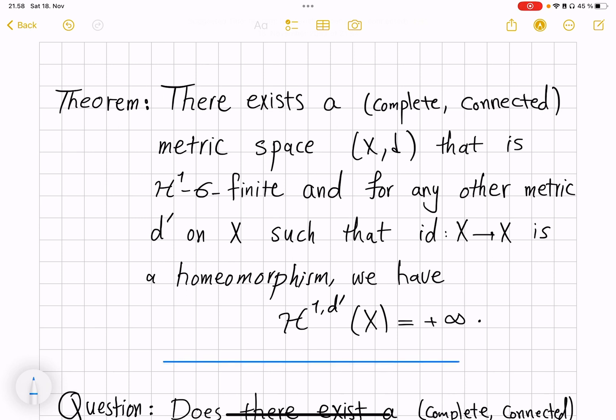For example, if you take a line, then it is H^1 sigma finite because it's union of such pieces of it, each having finite H^1 measure. So the whole line is an H^1 sigma finite complete and connected metric space.